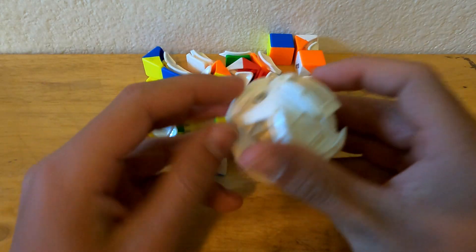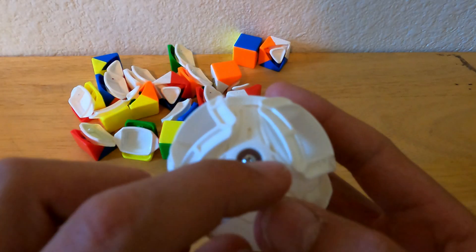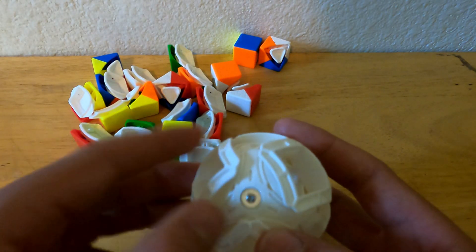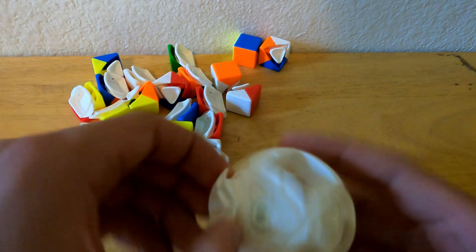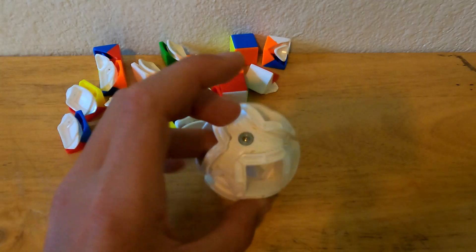So this is what is inside of your Qi void cube. Pretty much how this works is it has these little triangular pieces that are screwed on, and they're holding on these little center pieces which hold on the edge pieces which hold on the corners.